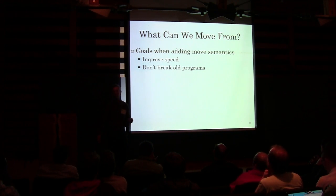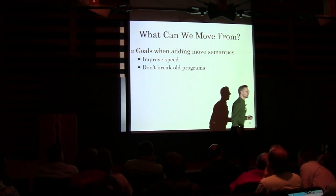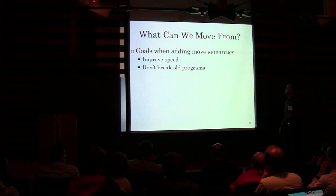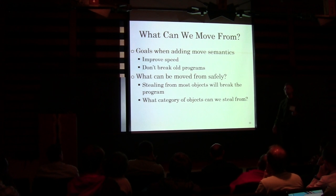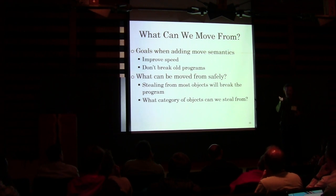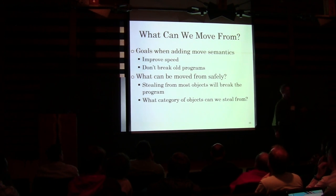If you have an object where it has no references to the free store, no references to anything outside of itself, you can't move it — all you can do is copy it. So once you say you want to do this stuff, what can you move from? You want to avoid breaking old programs but still want the greater speed. Most objects — anything that somebody has a reference to — if you steal the parts out of it, the program is going to be broken. So what category of things can we steal from? Those are temporaries.